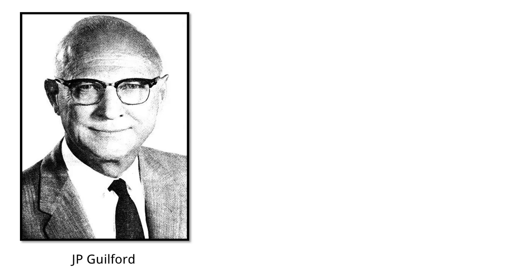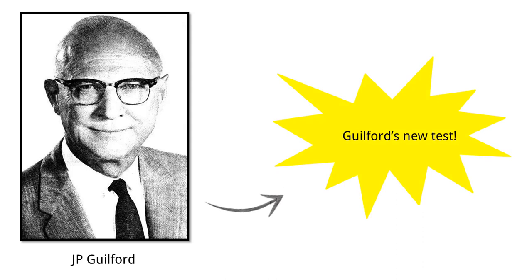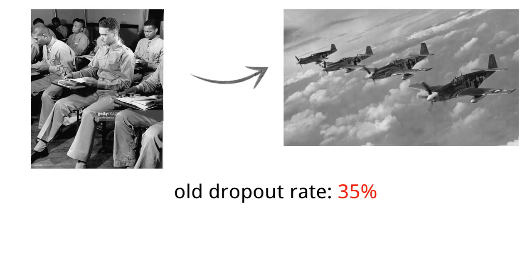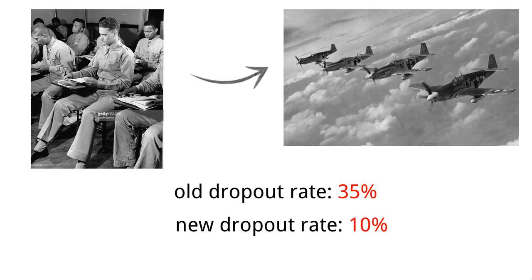J.P. Guilford did a whole bunch of experiments and research and spent a lot of time understanding the existing test. He looked at the pilots and things like that, and after a lot of time, he created a new test that could be used with the potential pilots. When they brought it in, things started to change. The old dropout rate was 35%, but when they introduced Guilford's new test, the dropout rate became less than 10%. This is a pretty significant change.